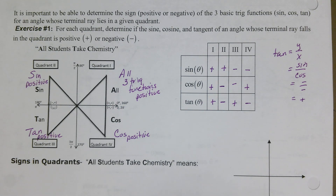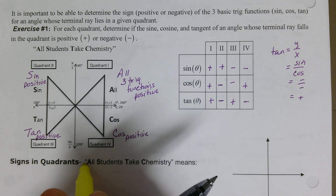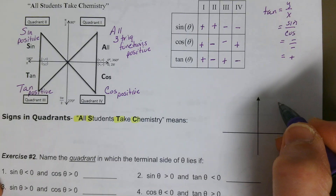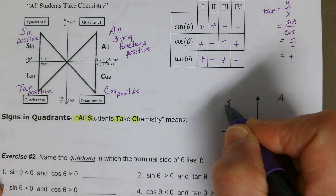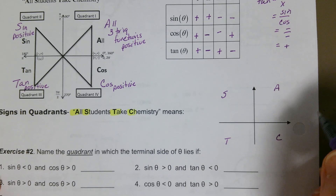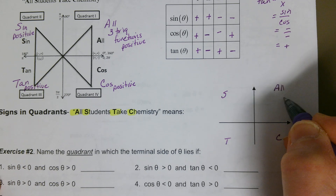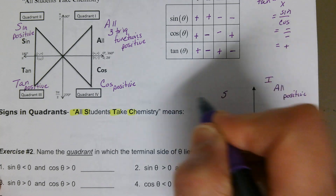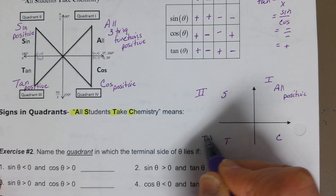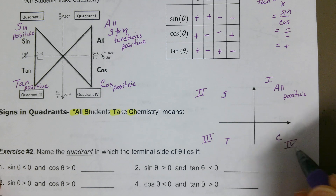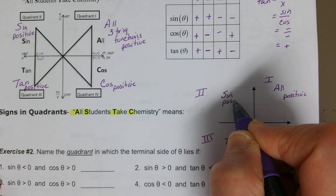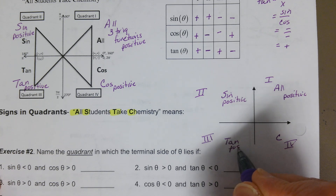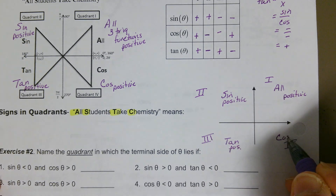So remember: all students take chemistry means all are positive in quadrant one, sine is positive in quadrant two, tangent is positive in quadrant three, and cosine is positive in quadrant four.